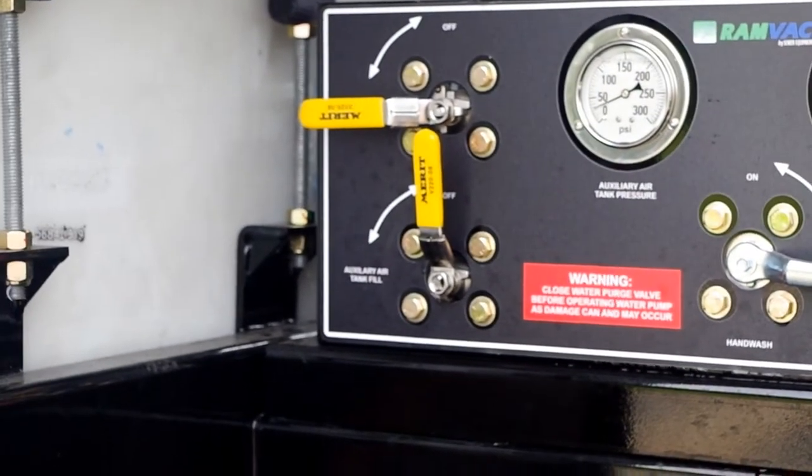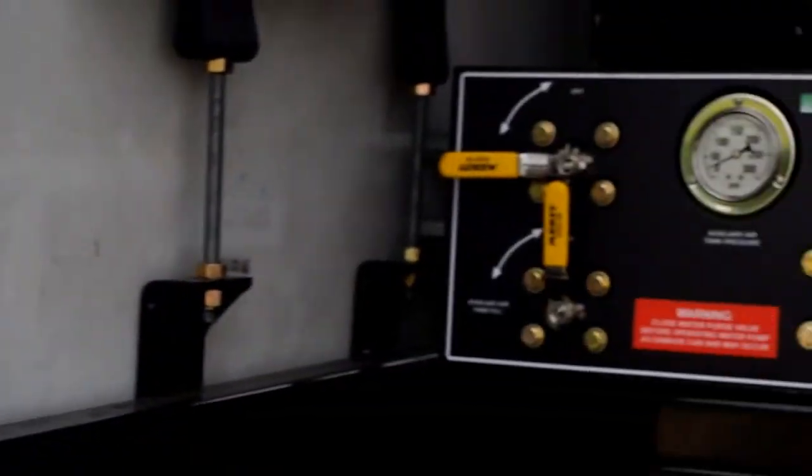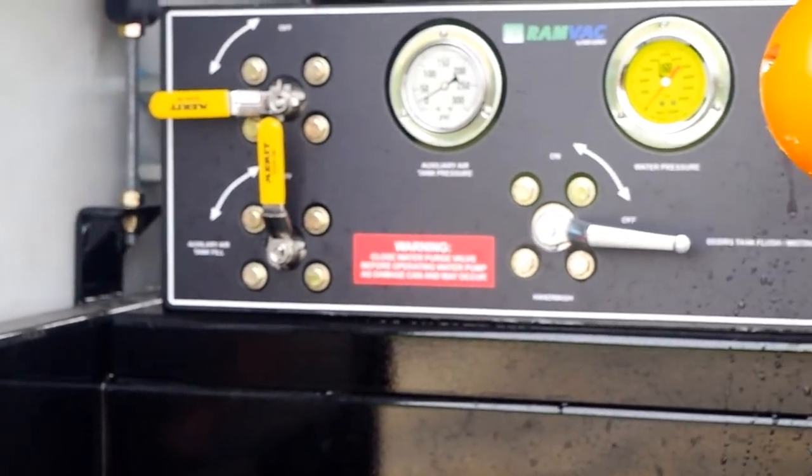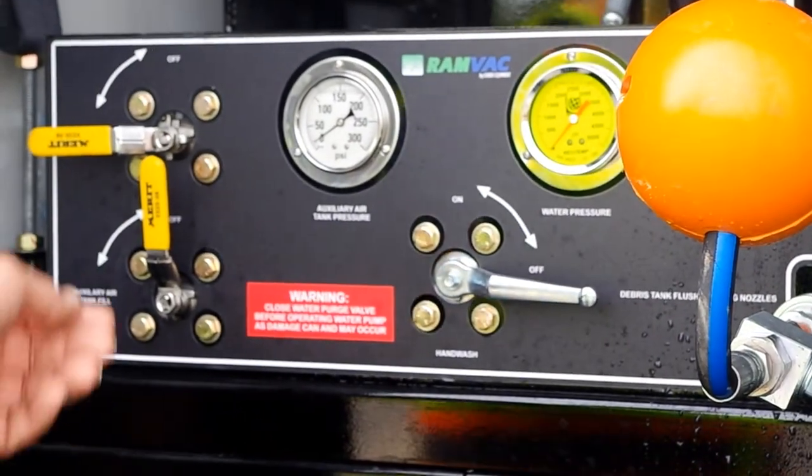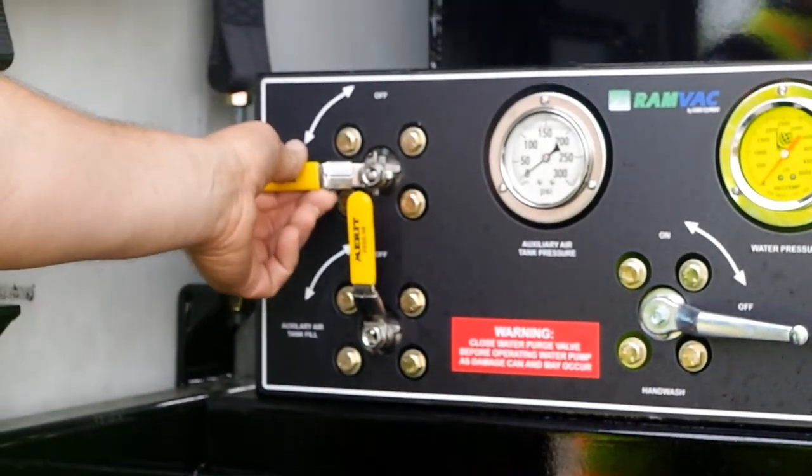Once water is out of the system, throttle the truck back down and turn the auxiliary tank fill valve off. Wait until auxiliary air pressure reaches zero and turn the water purge valve off.